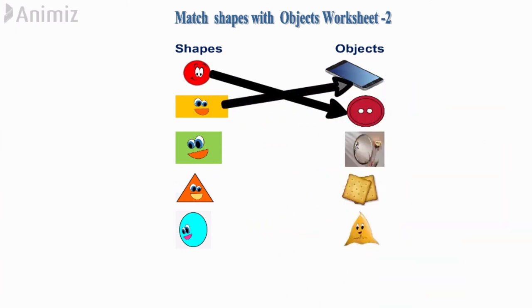In the first column, the third shape is square. Let's find the object. Yes, it is a biscuit.